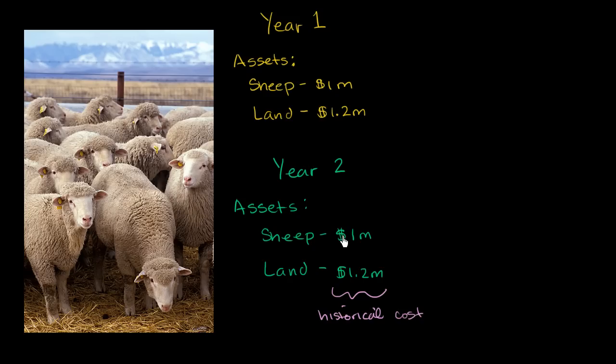This is a legitimate way to account for things, especially if there's no other way to think about what the sheep or land are worth. You say, this is what I paid for them. Now let's say there is an active market in sheep, and you can get a sheep appraiser to come to your farm and tell you what your sheep are worth. The appraiser comes and says, your sheep are looking good. There's been a sheep epidemic in another part of the country, so there's a sheep shortage. Your sheep are actually worth a lot more than they were last year.